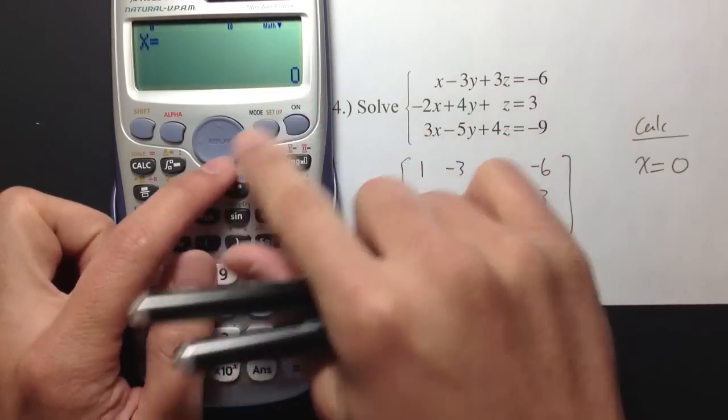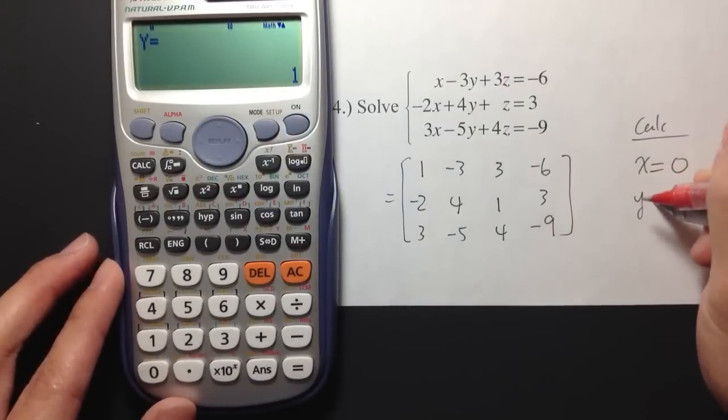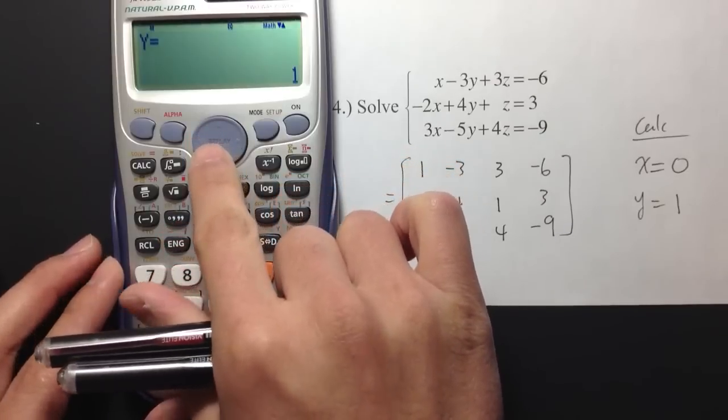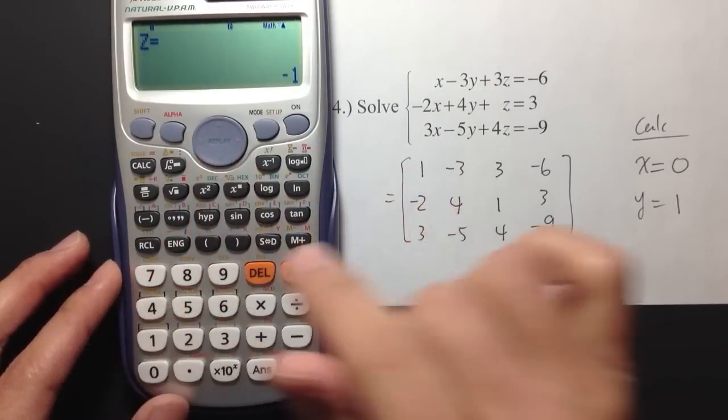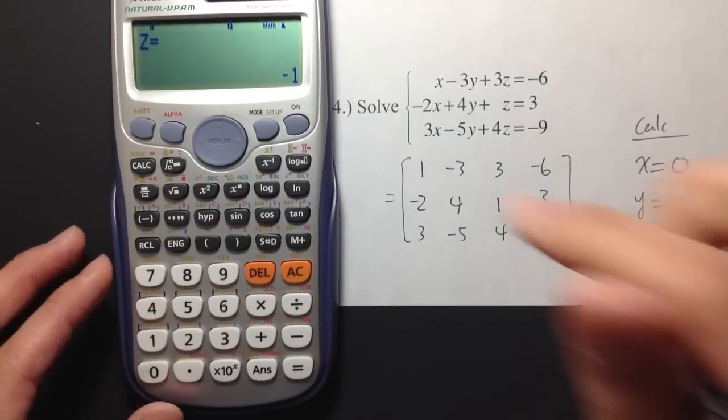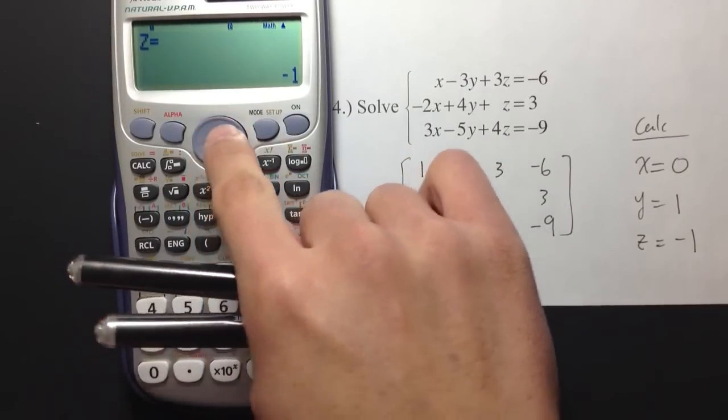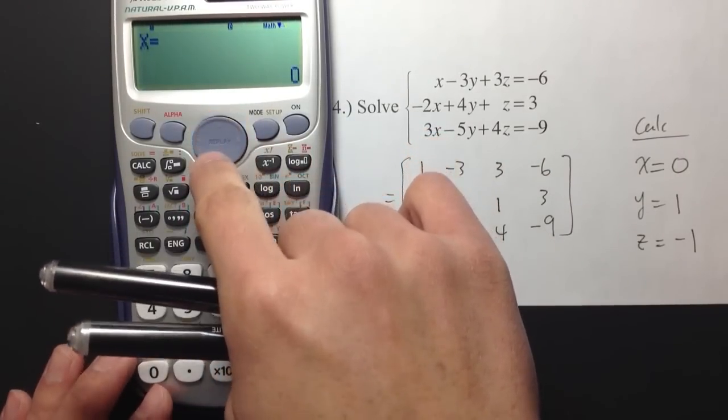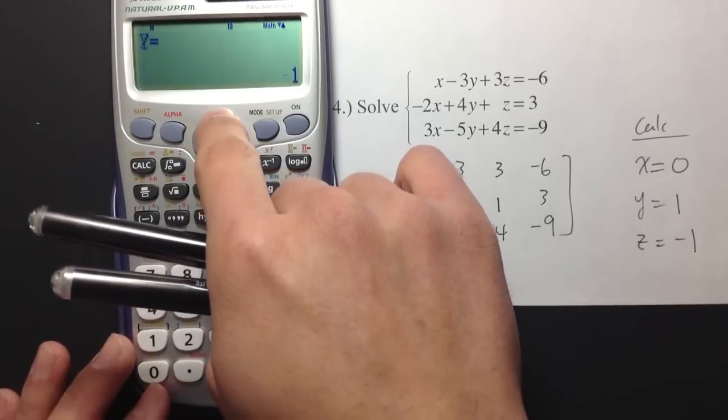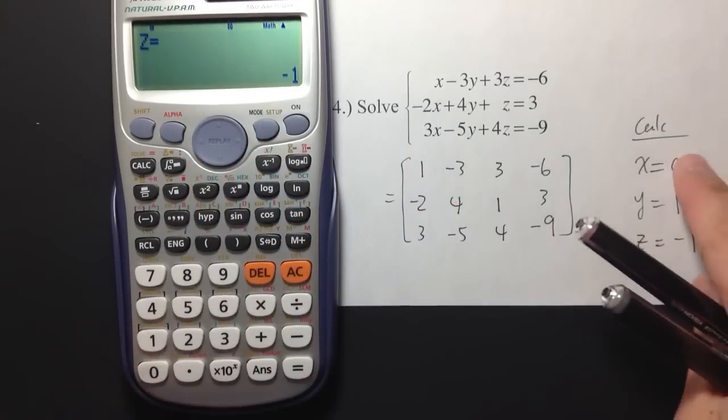And then, if you press the down button right here, we know y is equal to 1. Y is equal to 1. And then, if we press the down button again, z is equal to negative 1. So, you can just press the down button or the up button so you can go back or go down. So, 0, 1, negative 1, for the x, y, and z.